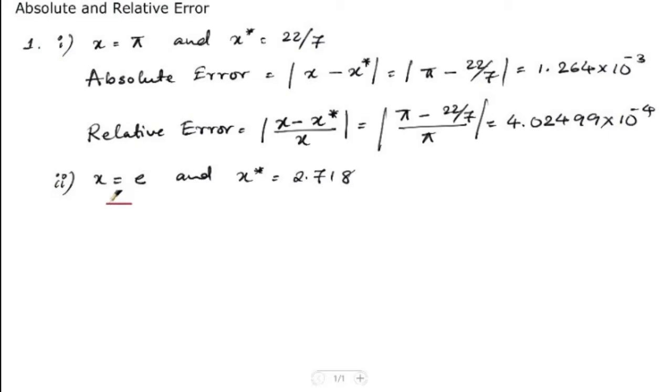So here the absolute error is equal to x minus x star, which is equal to e minus 2.718, that would give us the value 0.066006635.